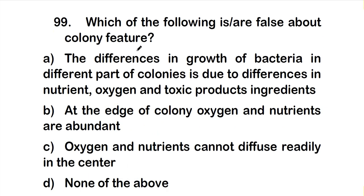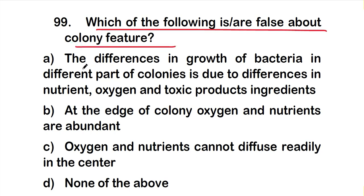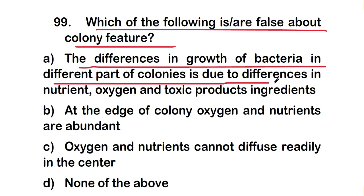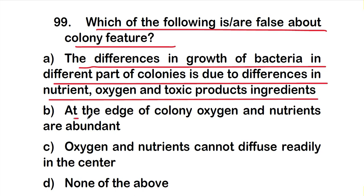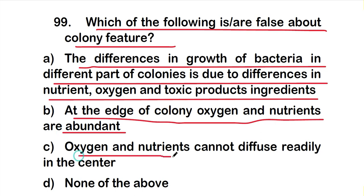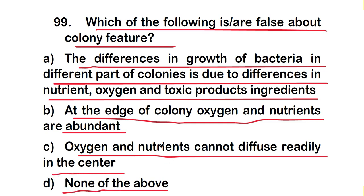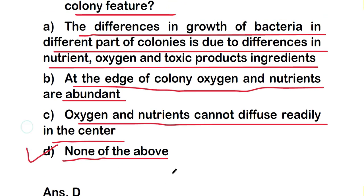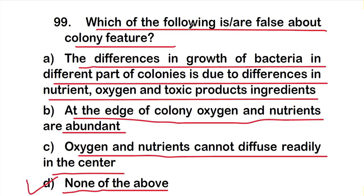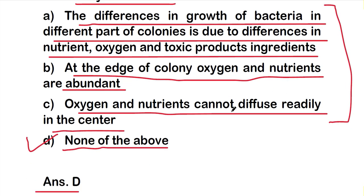Question number 99: Which of the following is false about colony features? Option A: differences in growth in different parts of colonies are due to differences in nutrient, oxygen, and toxic products, option B: at the edge of a colony, oxygen and nutrients are abundant, option C: oxygen and nutrients cannot diffuse readily to the center, option D: none of the above. The right answer is option D — none of the above is false; all statements are true about colony features.